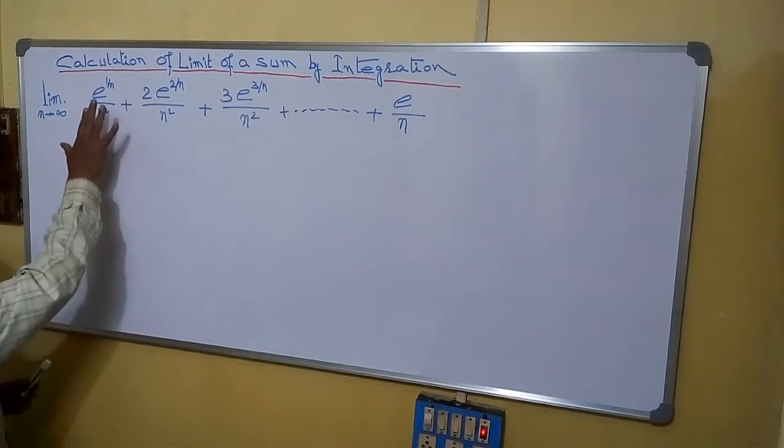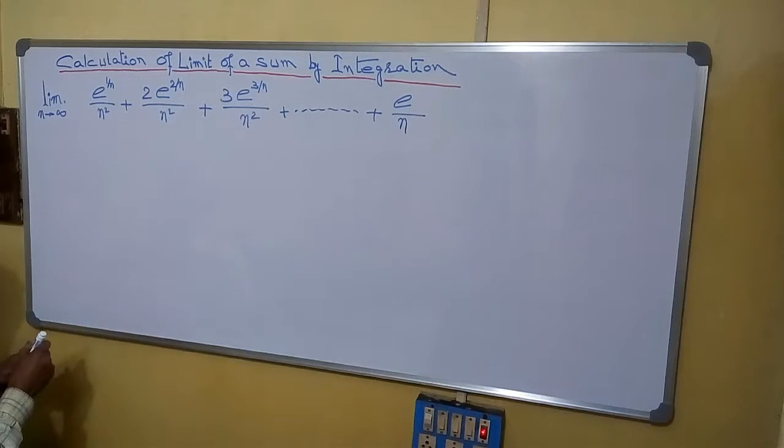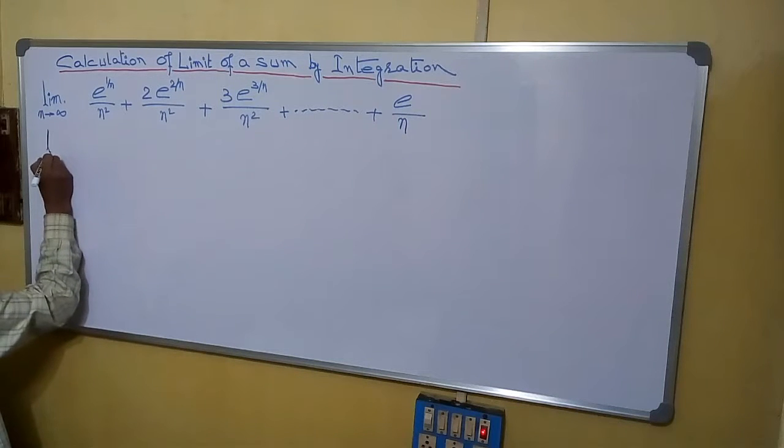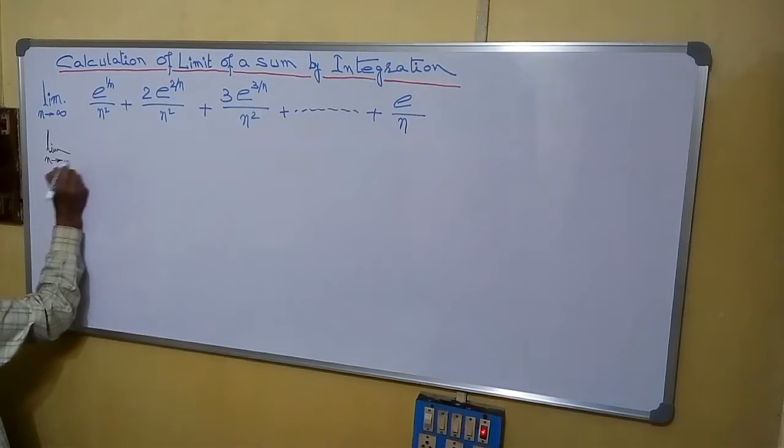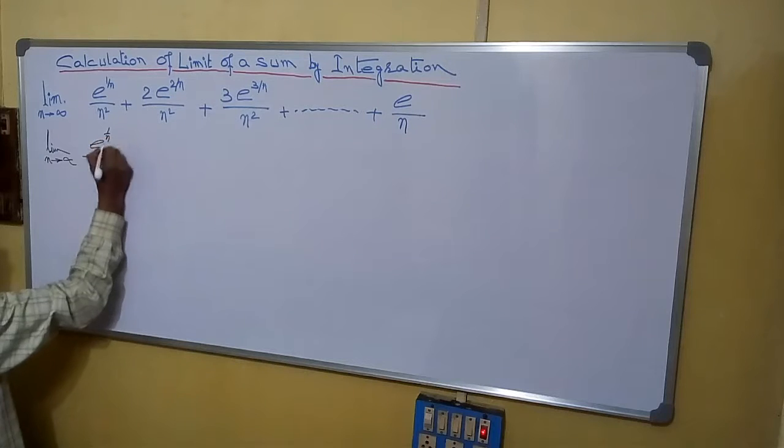First, try to arrange the entire quantities as a symmetry. See, so this one we can write: limit n tends to infinity, first one is e^(1/n)/n^2...